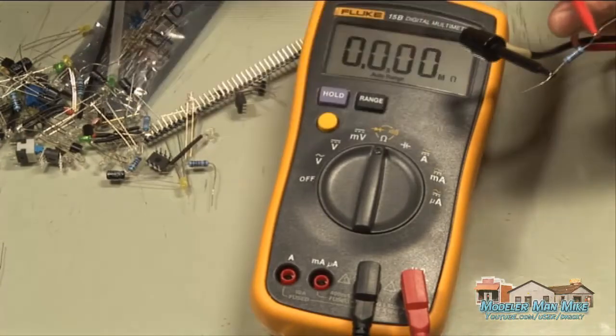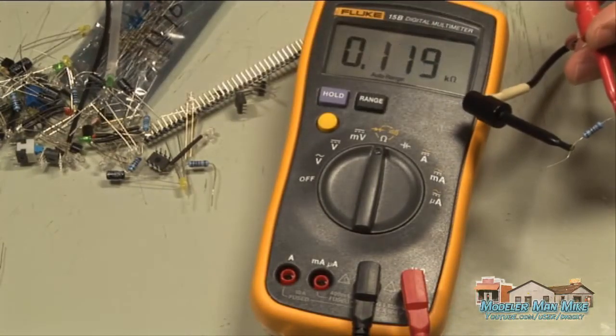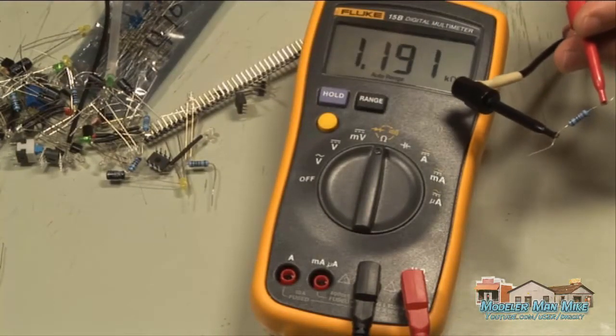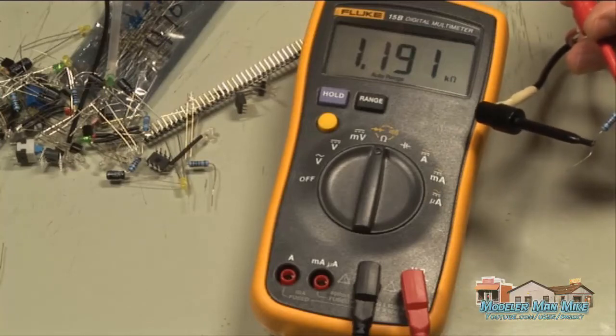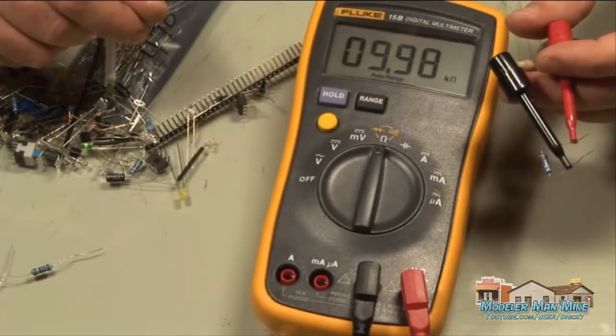And this one looks like a 1.2K ohm resistor. This looks like a 10K ohm resistor.